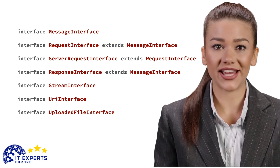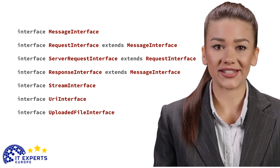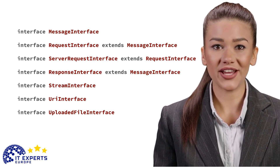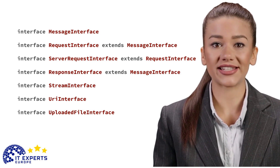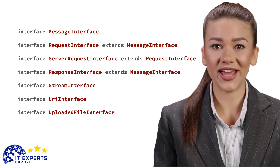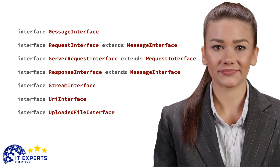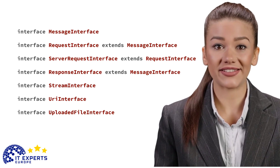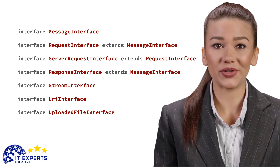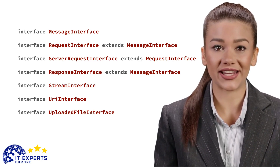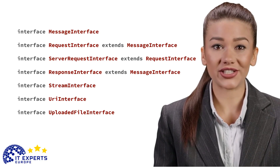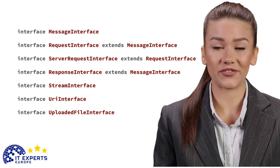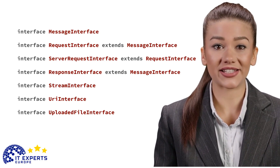Typically, the host header will also be present in the request message. For server-side requests, the scheme will typically be discoverable in the server parameters. Uploaded File Interface: Value object representing a file uploaded through an HTTP request. Instances of this interface are considered immutable. All methods that might change state MUST be implemented such that they retain the internal state of the current instance and return an instance that contains the changed state.